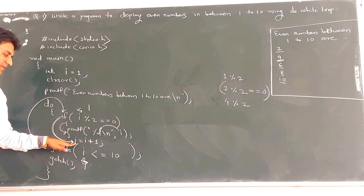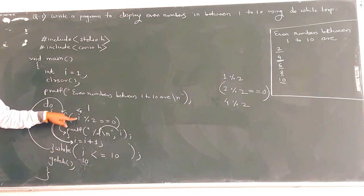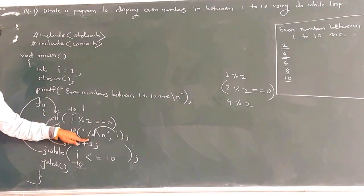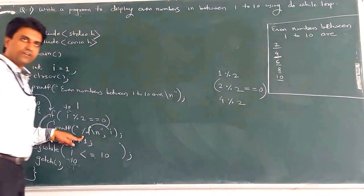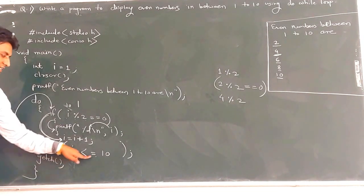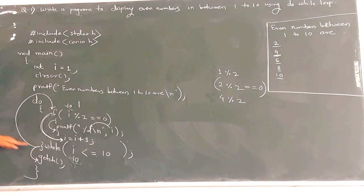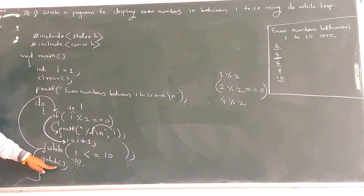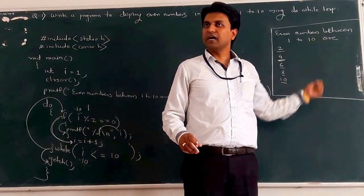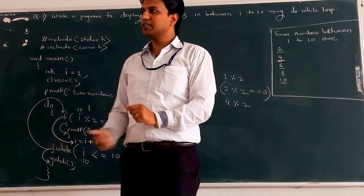When i becomes 10, the condition 10 <= 10 is true. Then 10 mod 2 gives 0 — condition true — so 10 gets printed. That is the last even number. Next, i++ makes i equal to 11. The condition 11 <= 10 is false, so the loop terminates. The cursor goes to the next line after the do-while loop. The last step is getch() to freeze the console, and we get the expected output: 2, 4, 6, 8, and 10.